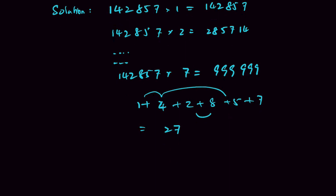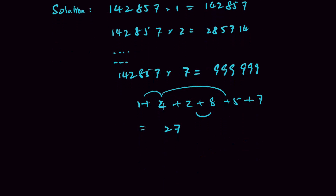It is enough to divide 2018 by 27. By which we get 74, with a remainder of 20.